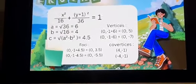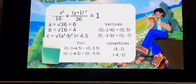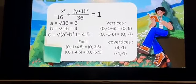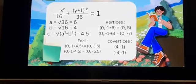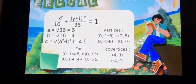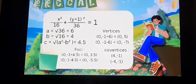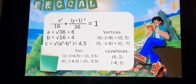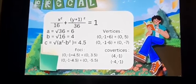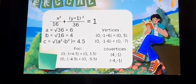To get the foci, we first have to square root the quantity of a squared minus b squared, that's 36 minus 16, equals 20. So we square root 20, that's 4.47, and we round it off to the nearest tenth, that's 4.5.